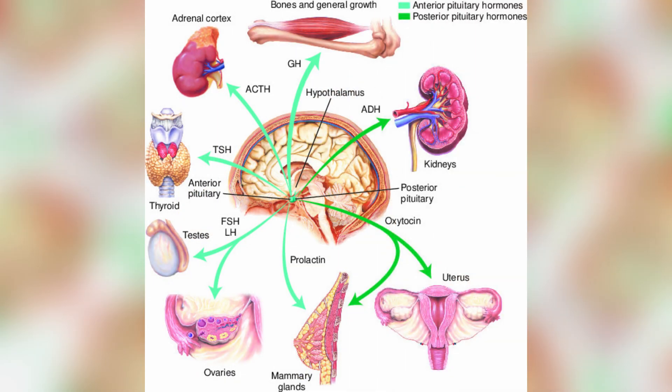These glands produce and secrete hormones into the bloodstream, traveling and affecting various target tissues in the body. Endocrine glands produce hormones that regulate the body's functions and development, metabolism, reproduction, growth, and sleep.